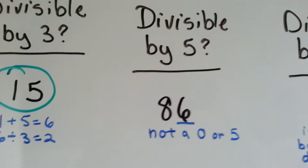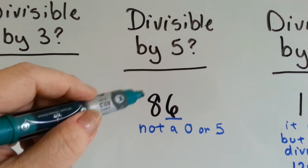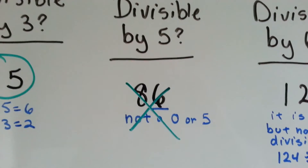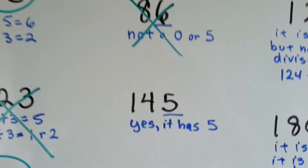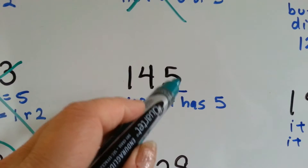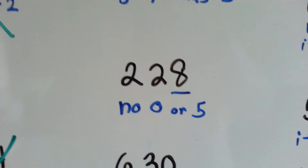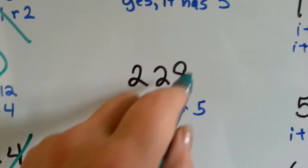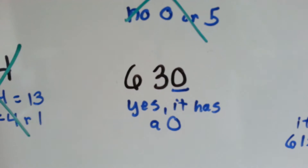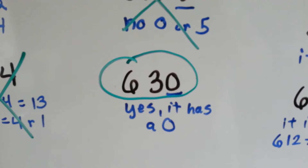Let's try some 5s. The rule says it's got to end with a 0 or 5, and 86 ends with a 6, so it's not divisible by 5. How about 145? Is that divisible by 5? Yes, because it ends with a 5. How about 228? It ends with an 8, so no. How about 630? It ends with a 0, so yes, it's divisible by 5.